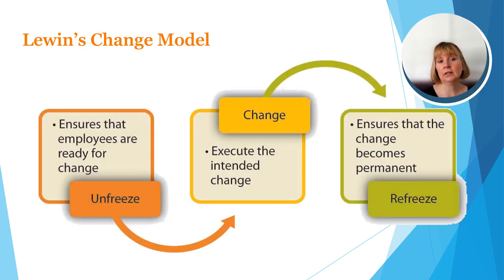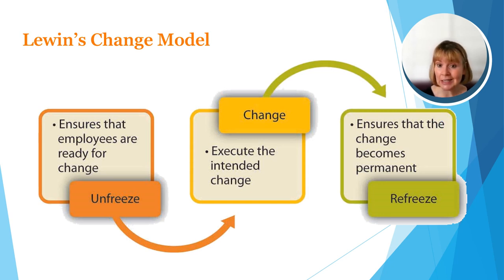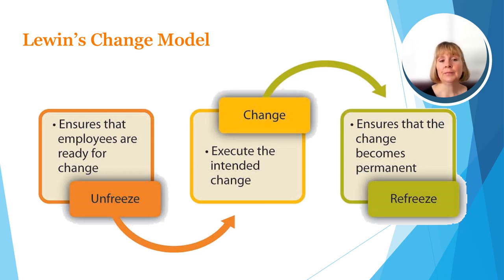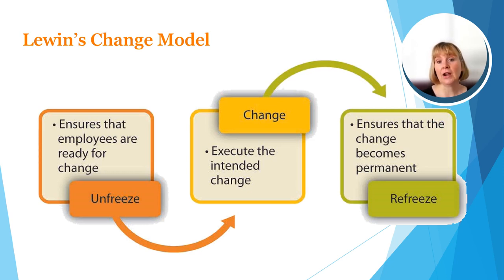Here is a slide that explains the three-step process for Lewin's change model. It's essentially three steps: unfreeze, then you make the change, then you refreeze. In the first step, the process of changing entails creating a perception that the change is actually needed. You might want to create a sense of urgency, but you have to convince the employees and ensure that they're ready for change. This might include letting them know well in advance that it's coming, having meetings to explain exactly what's going to happen, and then slowly moving into the change stage. Then you move towards the new desired change or level of behavior, and finally you solidify that new behavior as the norm.